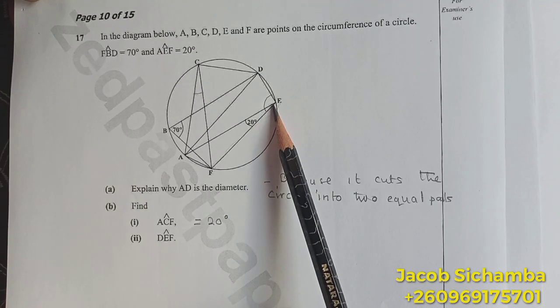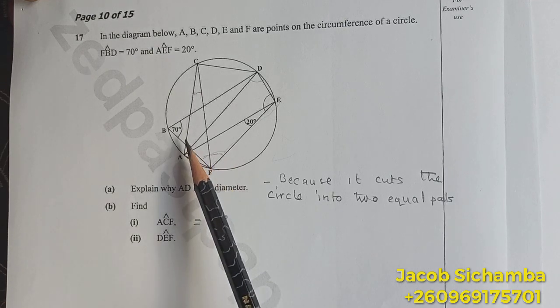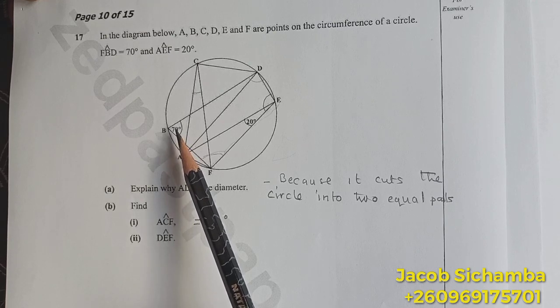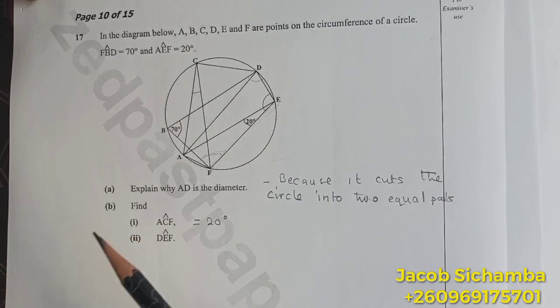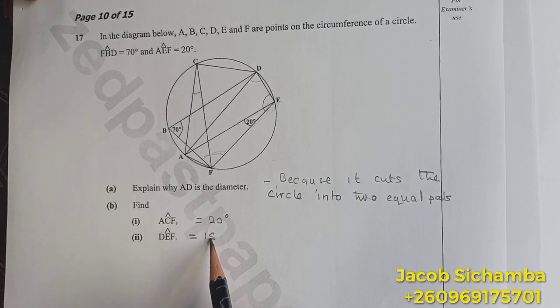The property says opposite angles add up to 180. So this angle plus this angle is equal to 180.